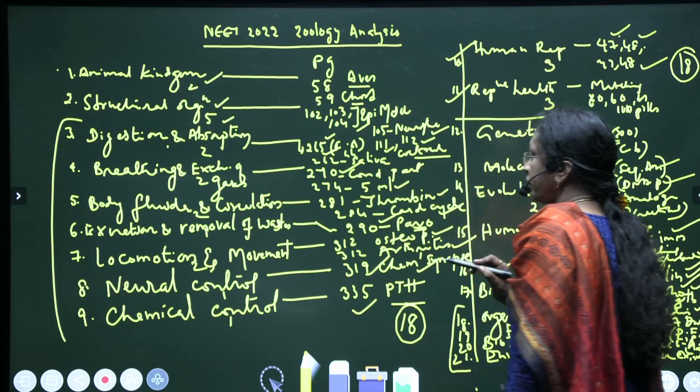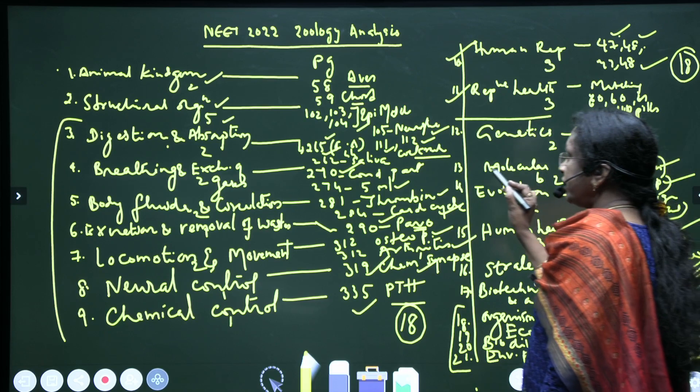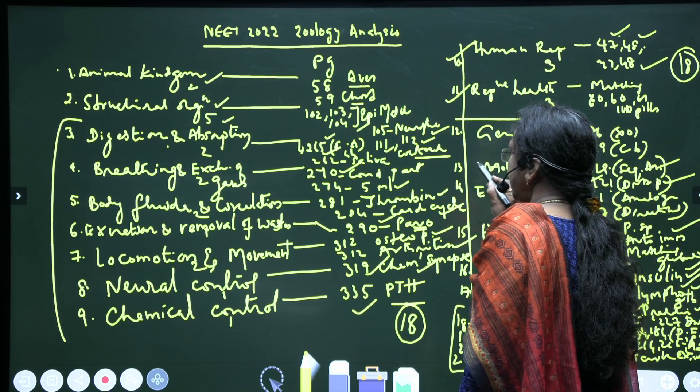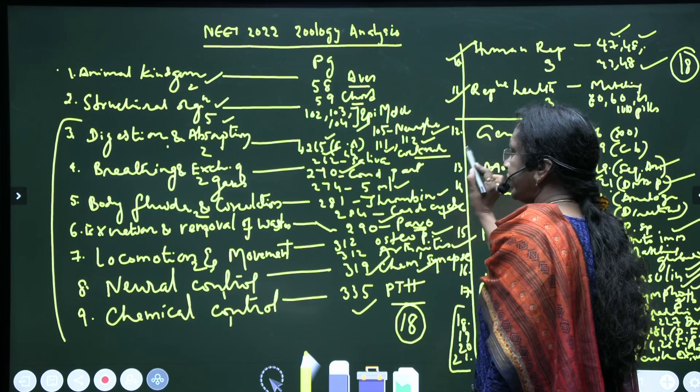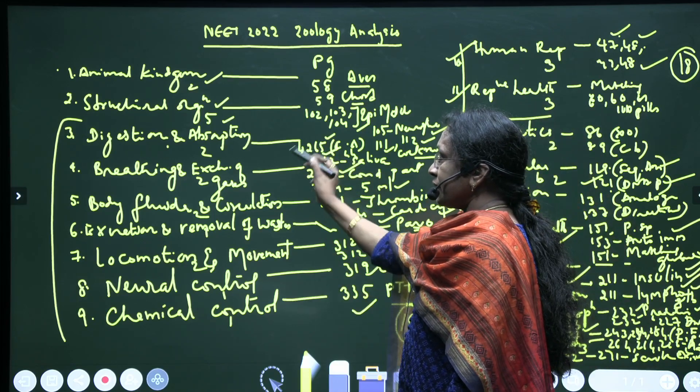Which is very easy - their exoskeleton is made up of chitin. That question is given very easy. And coming to Human Physiology Plus One part, Digestion and Absorption, we got two questions.